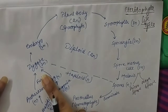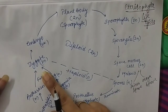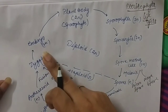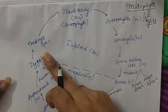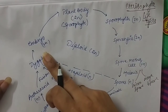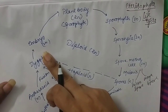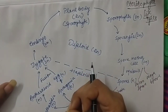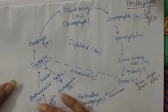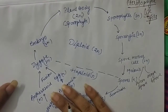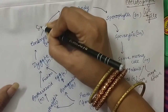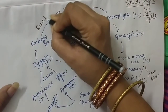This zygote starts to develop and changes into an embryo. This is a multicellular structure, and the embryo shows many changes in its structure, showing development toward what will eventually become the main plant body.